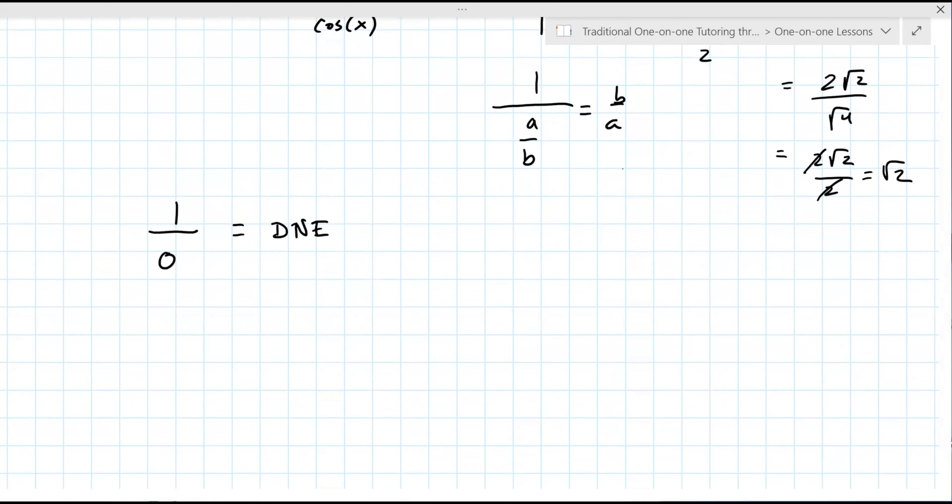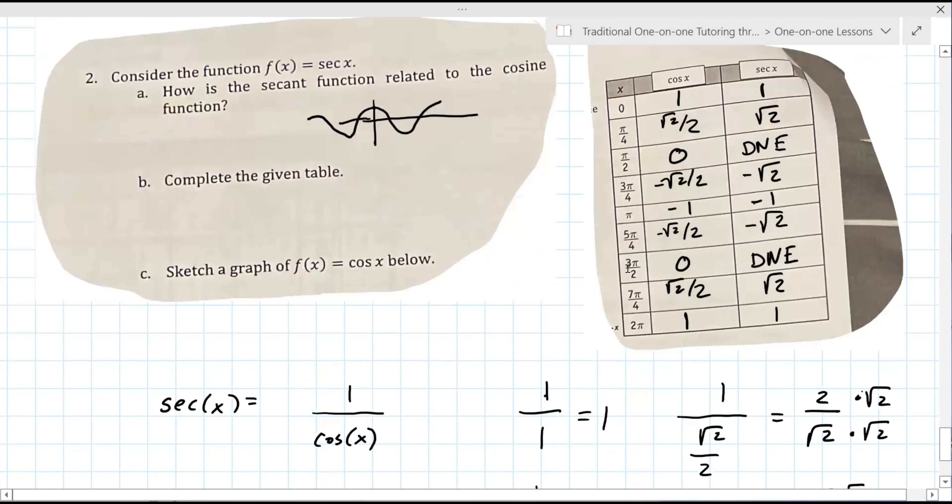In the numerator, you get two root two and the denominator, you get square root of four, which is two. So that leaves you with two square root two over two. The twos on the outside cancel and you're left with root two. So every single value in the right column is the reciprocal of the one on the left. Now you're going to say, well, what about the DNE? Well, what is one divided by zero? It's DNE. It does not exist. We just said that earlier in the lesson. You cannot divide by zero. So the point of this exercise is that you just need to know cosine to find secant.